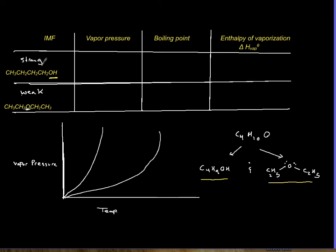If IMF is strong, you have low vapor pressure because they're not going to turn into gas. But what happens to boiling point, it should be high because the molecules are holding on to each other. What is delta H of vaporization for somebody who has strong IMF? It's also high. You need lots of energy, kilojoules, in order to convert it to gases.